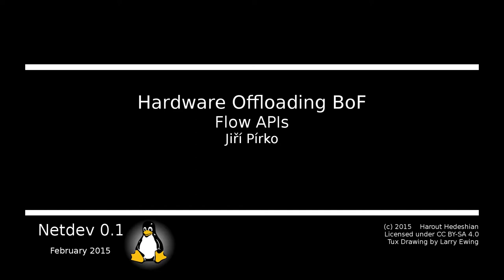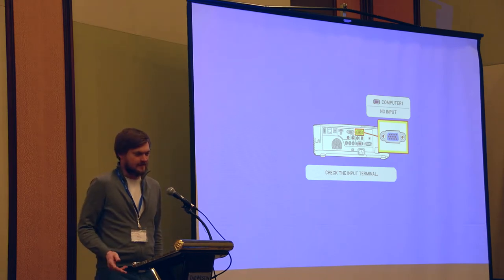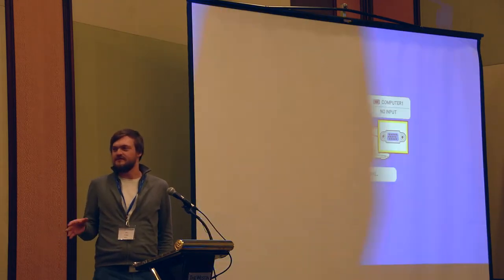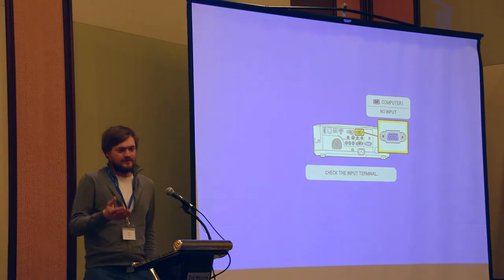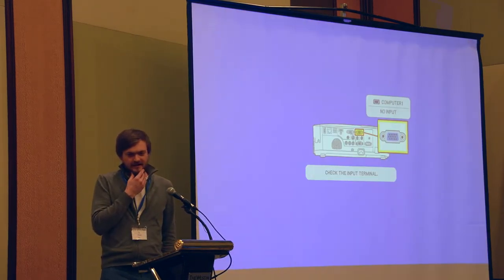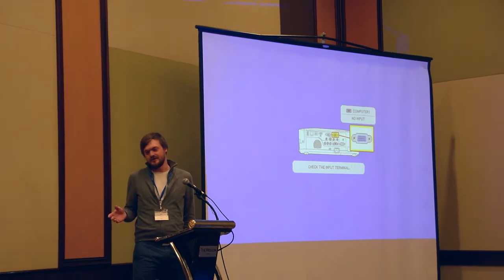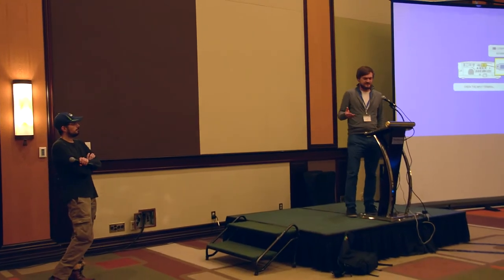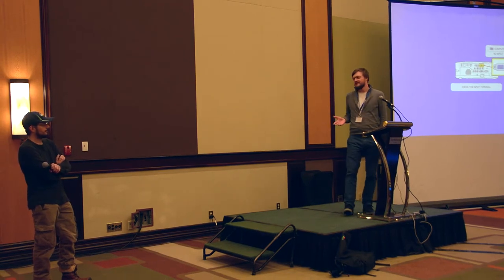I'd like to discuss the Flow API. My concern is, as Dave said already, we have a model in the kernel which is kind of good, and we want to offload stuff to hardware. With the Flow API, I see it allows more than that — not only offloading the existing stuff, but providing user space access to real hardware without the kernel being involved, which is kind of scary. What do you think, Dave?